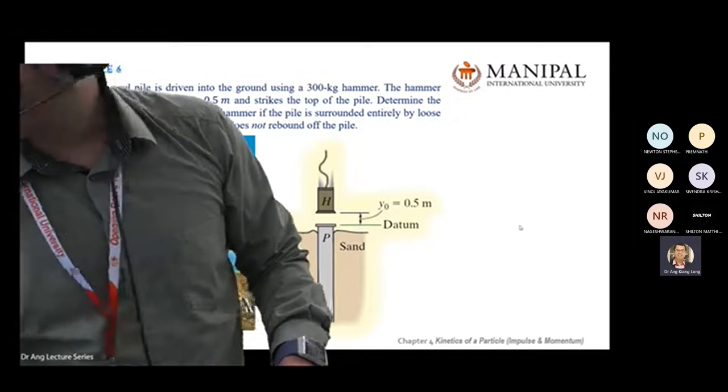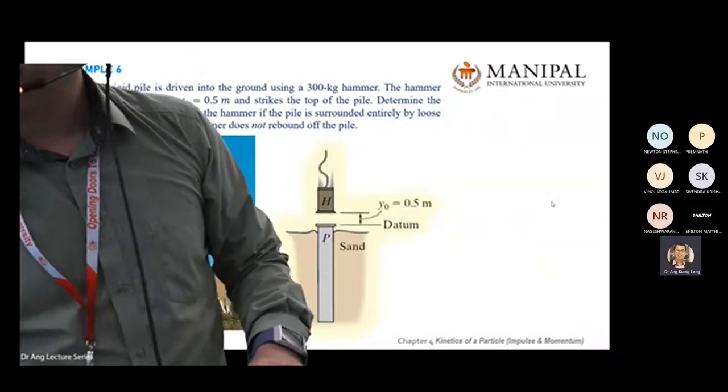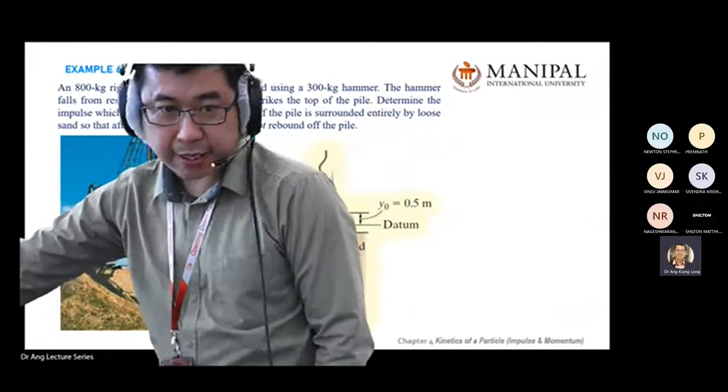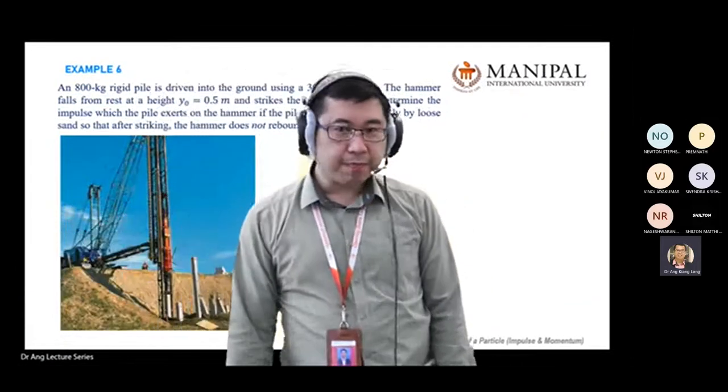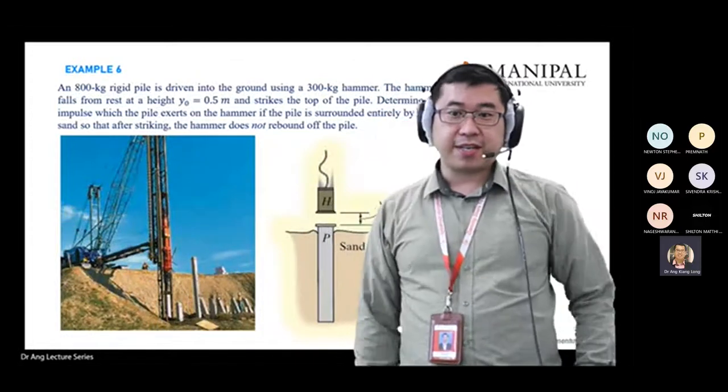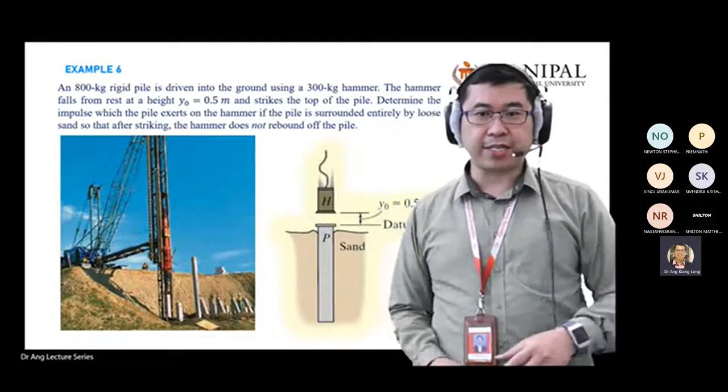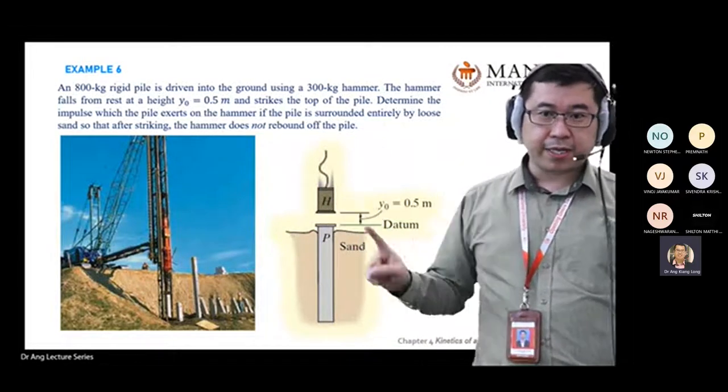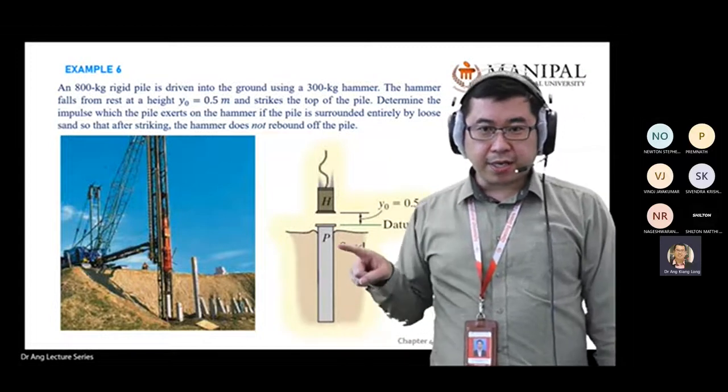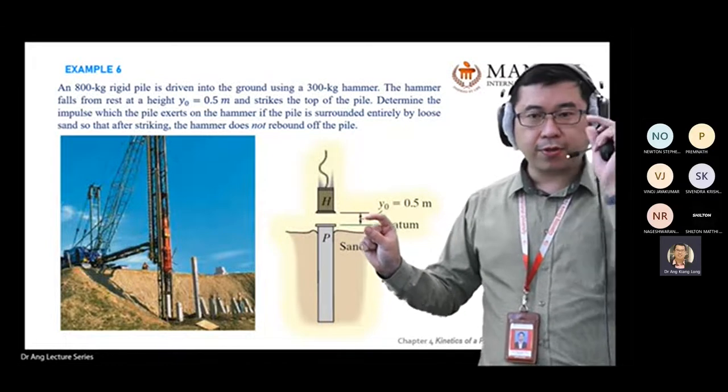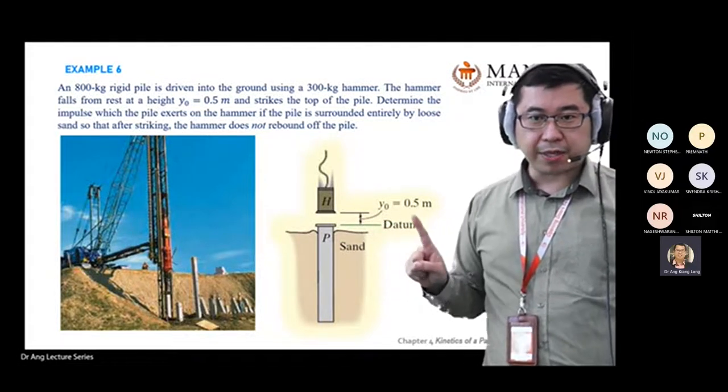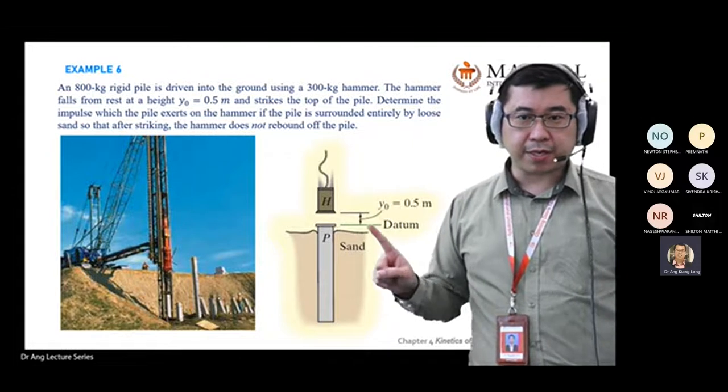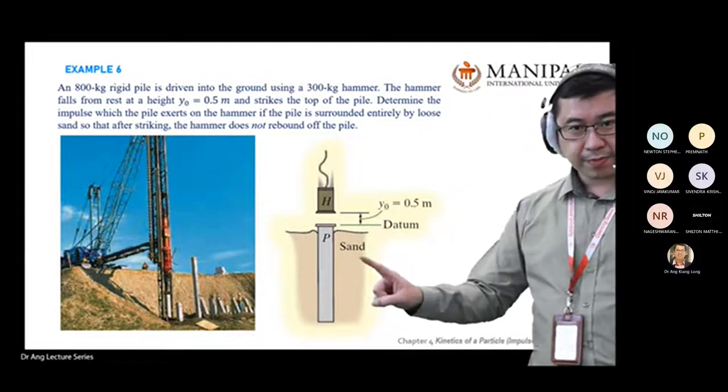Okay, Example Number 6. This is very common if you are in a construction site. Although you're studying mechanical engineering, don't be surprised - maybe some of you might land your job in civil industry. Civil also needs mechanical engineers. What you have here is just a normal piling process: a hammer hitting a pile or pylon into the sand, and the distance before impact is 0.5 meters. You are given data in this question.